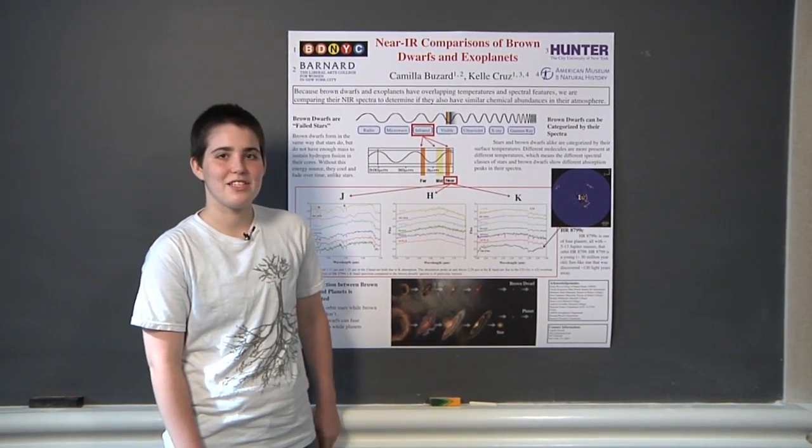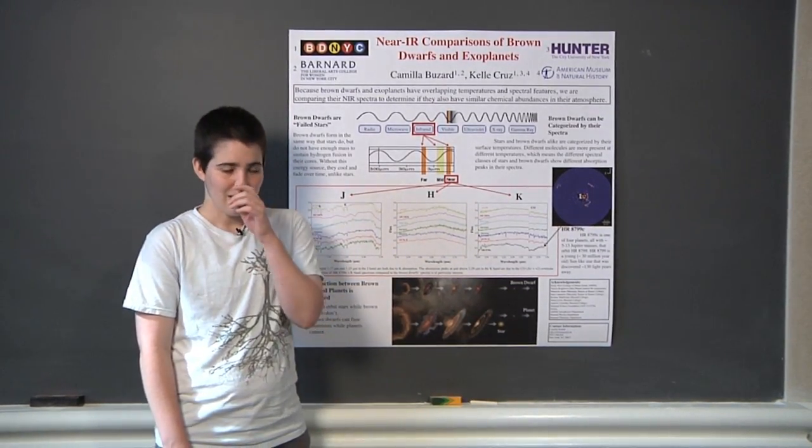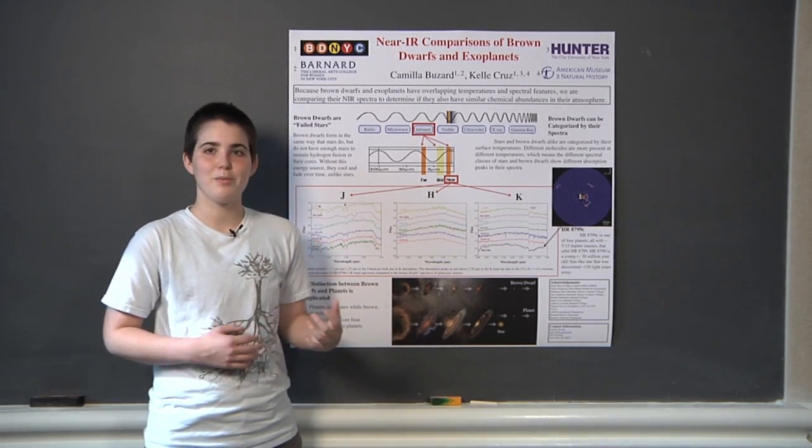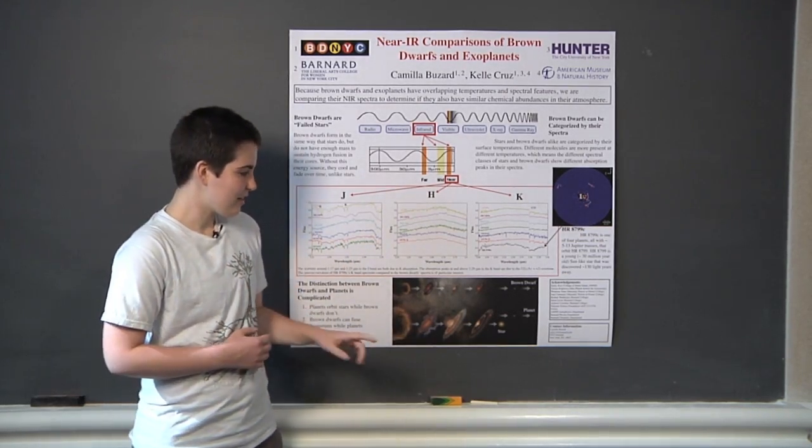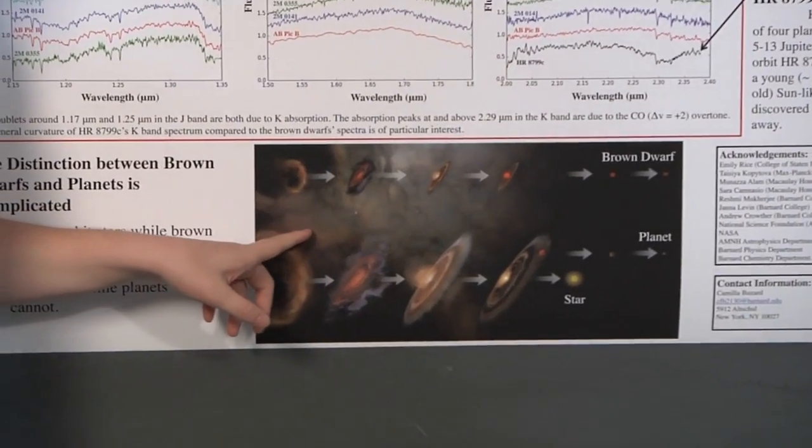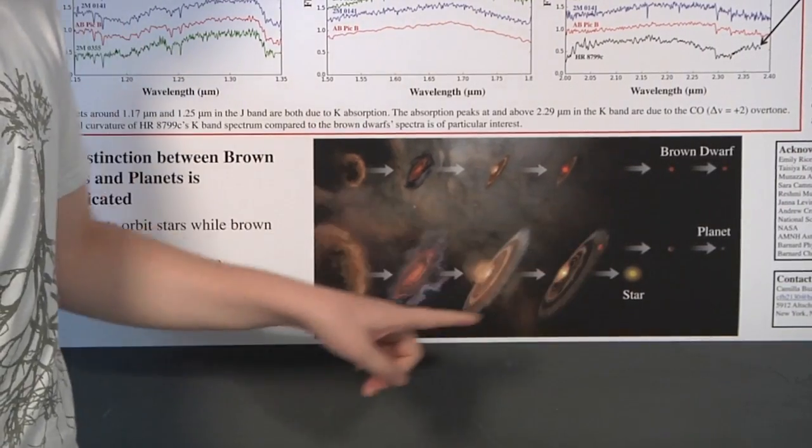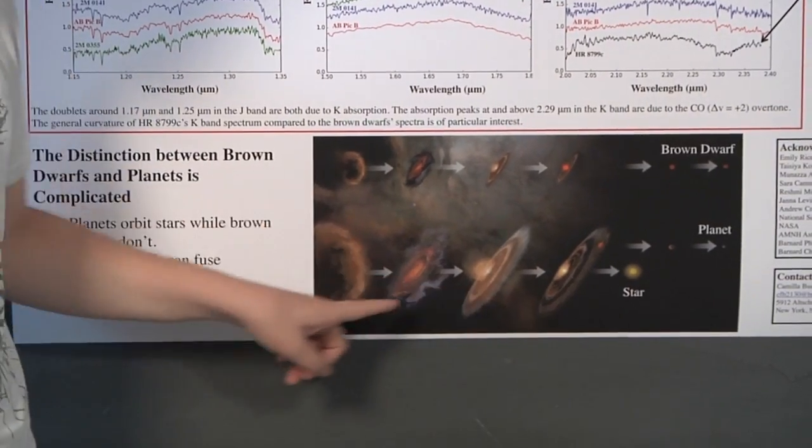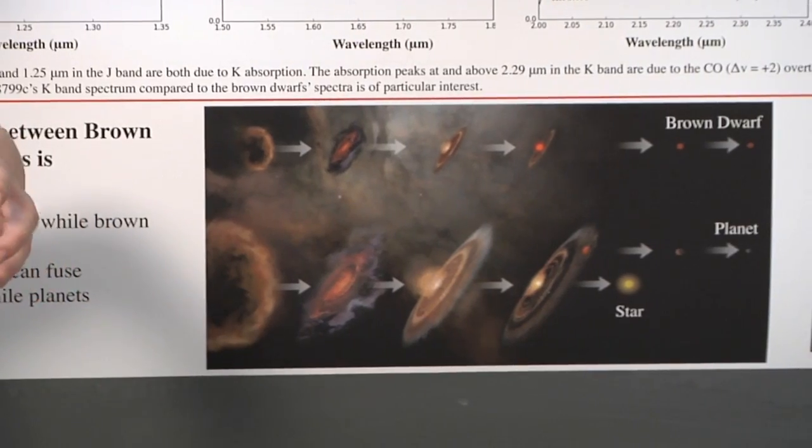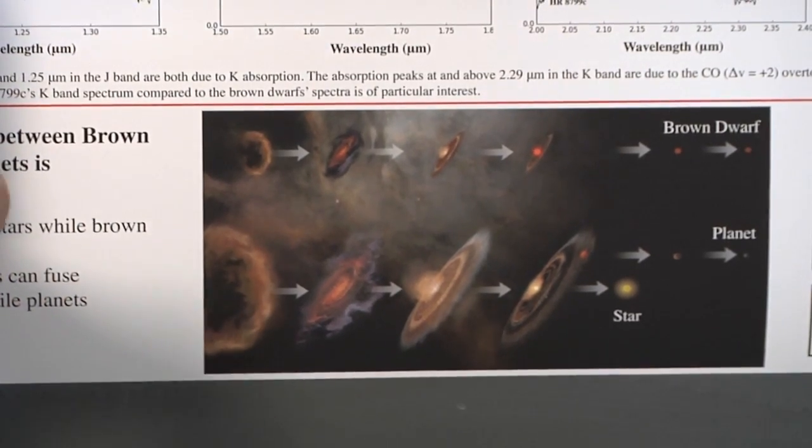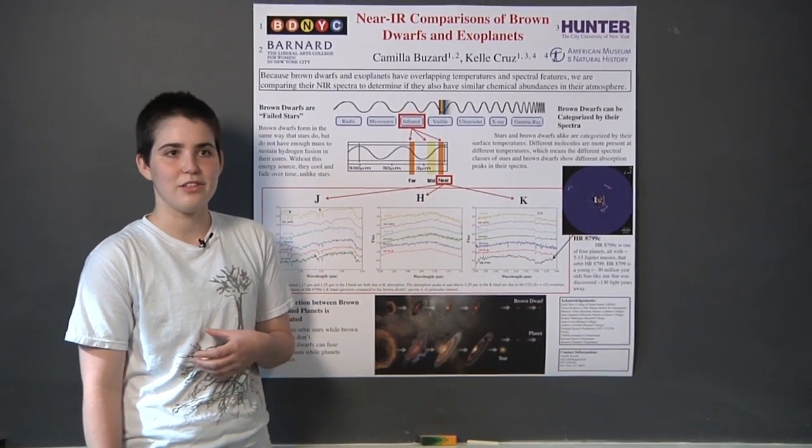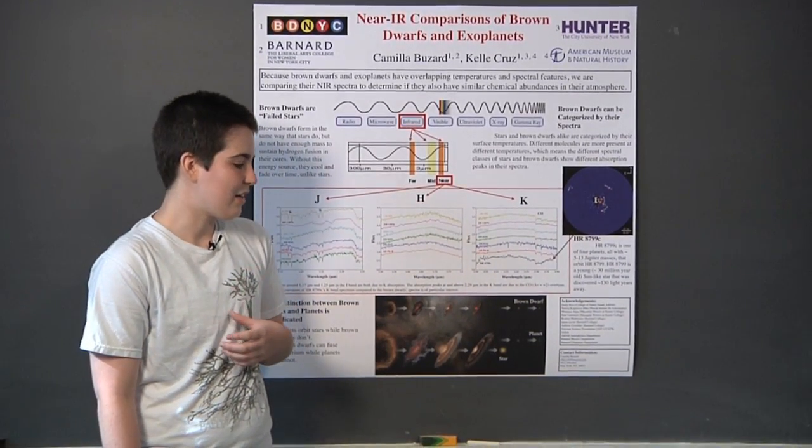Her group focuses on brown dwarfs. Brown dwarfs are often called failed stars because they form in the same way that stars do. This picture here shows how a brown dwarf forms from a relatively small molecular cloud, and on the very bottom a star forms in the exact same way but from a much larger molecular cloud. Because stars have so much more mass, they can actually sustain hydrogen fusion in their cores whereas brown dwarfs cannot.